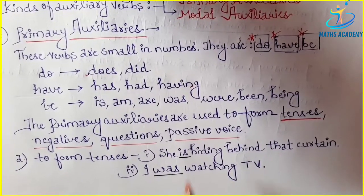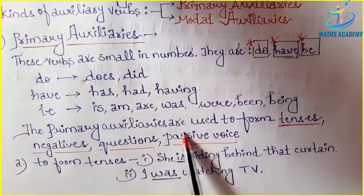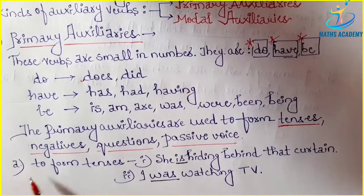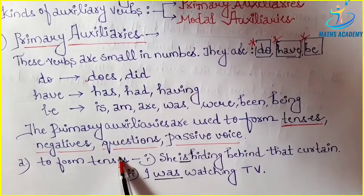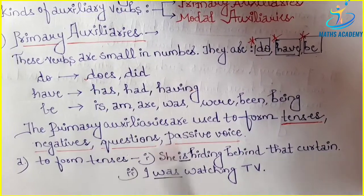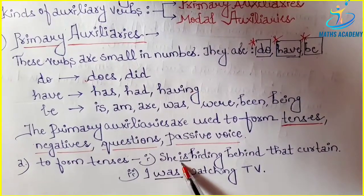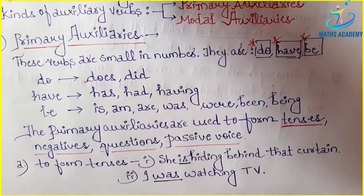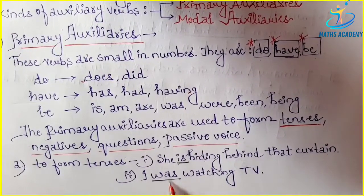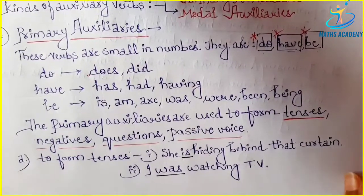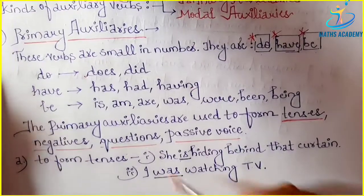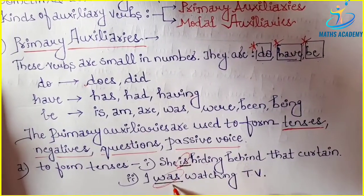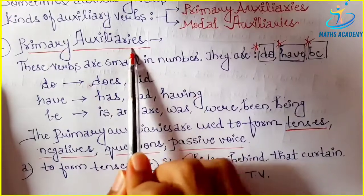As I have told you, primary auxiliaries are used to form sentences. So how are they used to form tenses? For example: 'She is hiding behind that curtain.' 'I was watching TV.' Here, is and was are the primary auxiliaries used to form tenses.